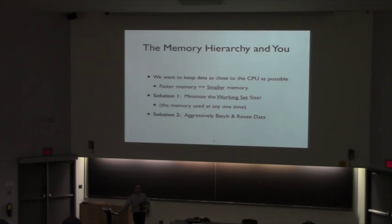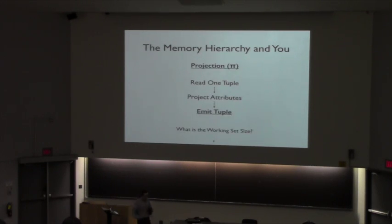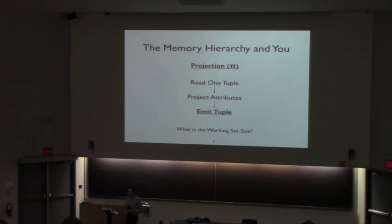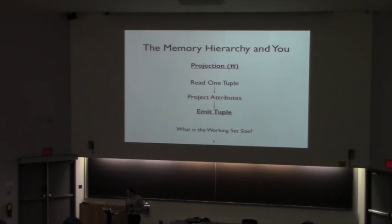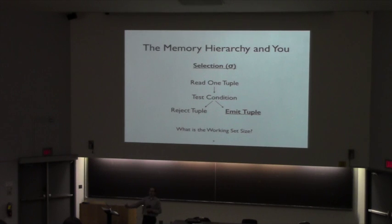Let's do some quick recaps. Projection: you implement it by reading one tuple, projecting away the attributes you need, and emitting the tuple. Working set size? One tuple at a time. Selection: same deal — read one tuple, check whether it satisfies the condition, emit it if it does, reject it if it doesn't. Working set size? One tuple. Union: you read from R as long as you have tuples; as soon as R is exhausted, you start reading from S. Working set size? One tuple.